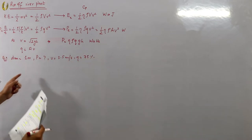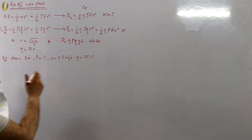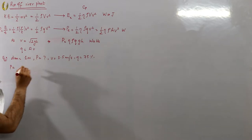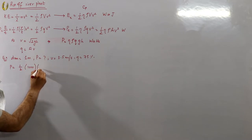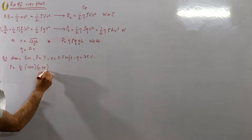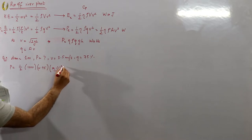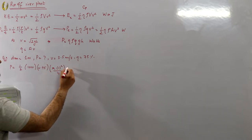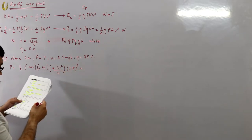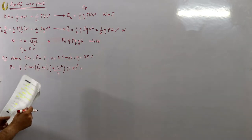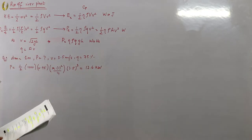For the solution, use the formula P = (1/2) × η × ρ × A × v³. Area = πd²/4 with d = 1 m. Substituting: P = (1/2) × 0.75 × 1000 × (π×1²/4) × (3.5)³. The power comes out to be 12.6 kilowatts.